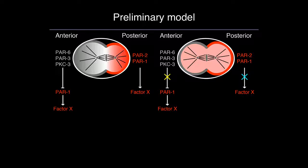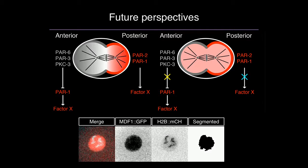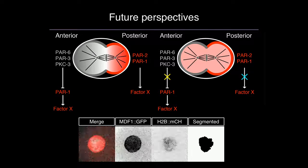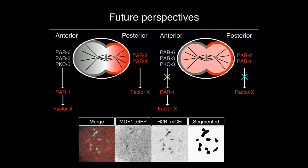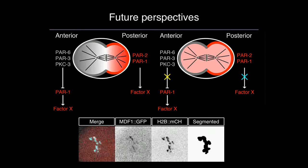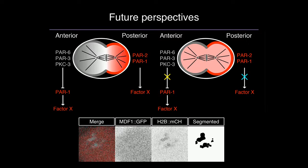One preliminary model that could explain this is if there's some factor X normally enriched in the posterior that acts to enhance checkpoint-dependent delays. When you knock down either set of PAR proteins, this factor becomes equilibrated between the two cells; as long as it's not limiting in quantity, you'd expect it to enhance delays in AB and leave P1 largely unaffected. Without knowing what factor X is, this is purely speculative. In the meantime, we're starting to measure the dynamics and levels of different checkpoint and kinetochore proteins in our monopolar spindle assay, and we'd like to establish a molecular link between PAR proteins and the checkpoint, and ask whether this regulation is relevant in the GSPCs.